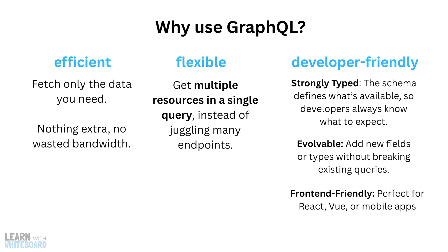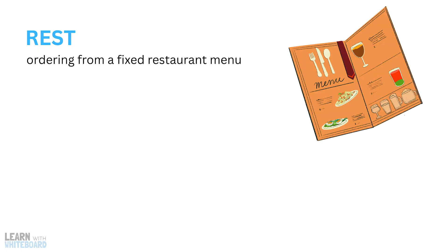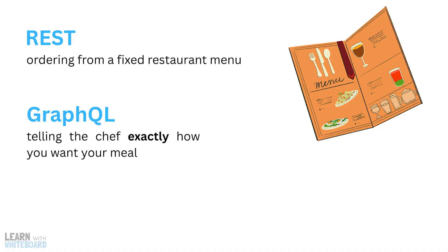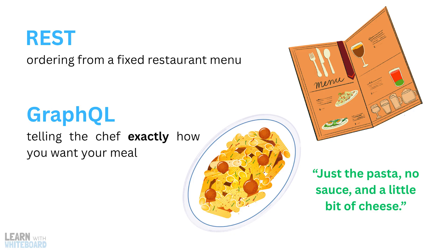GraphQL is also front-end-friendly, and perfect for React, Vue, or mobile apps, where developers can shape their own queries and get clean, structured data. Think of REST like ordering from a fixed restaurant menu — you can only pick the dishes listed, and each dish comes as is. GraphQL, on the other hand, is like telling the chef exactly how you want your meal — just the pasta, no sauce, and a little bit of cheese. You get exactly what you need, nothing wasted.